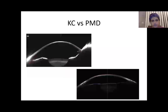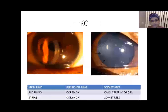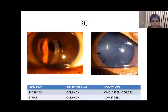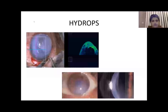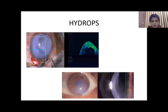This Scheimpflug image shows that in keratoconus, thinning and protrusion correspond, while in PMD the protrusion is superior to the area of thinning. Fleischer rings, striae, and scarring are common in keratoconus but seen only sometimes in PMD. Hydrops is more common in keratoconus compared to PMD, but in PMD progression occurs well into the mid-decades, so hydrops can still occur.